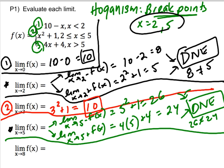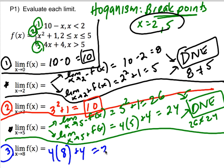For x equals eight, eight falls squarely in the last section, so it's using the third function. I go ahead and do four times eight plus four, which gives 36 and that's it. So when you're looking at a piecewise function, you just have to worry about these break points — those spots where the function switches. Beyond that, you don't have to worry too much about values that fall in each interval.